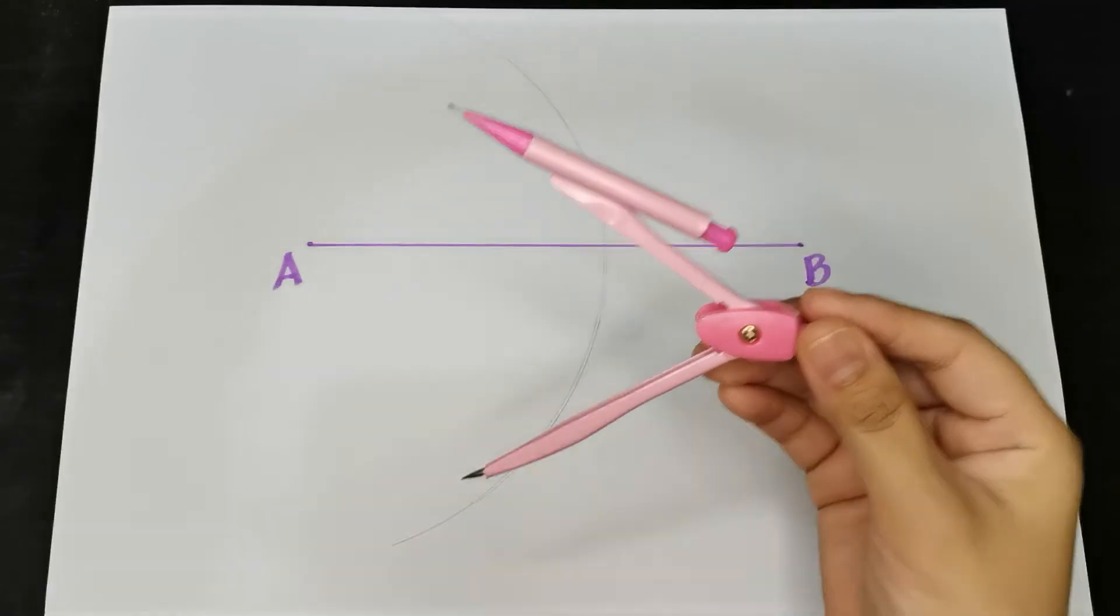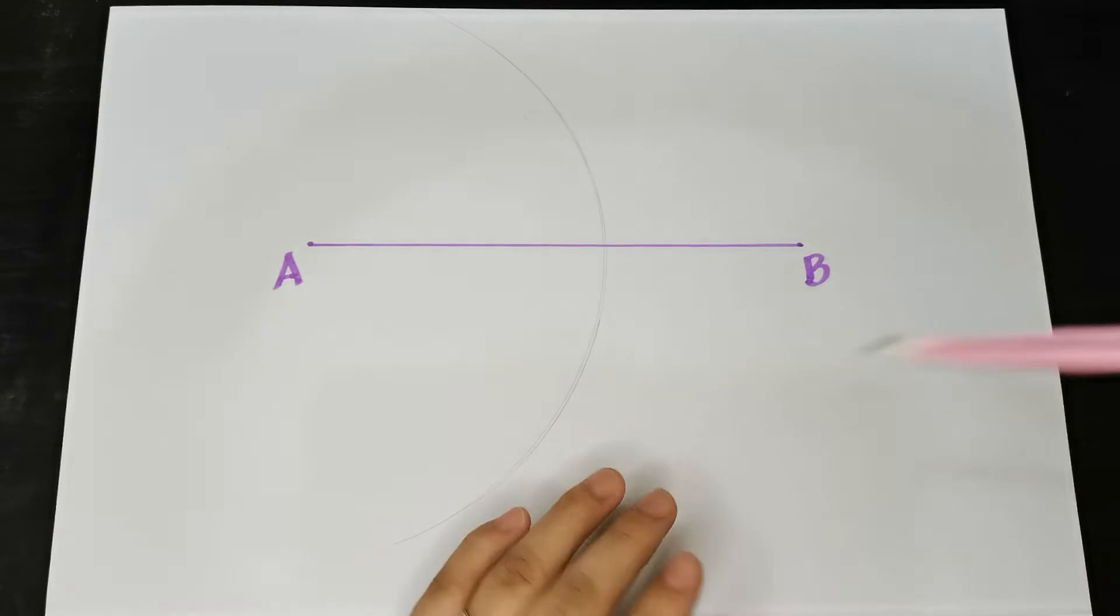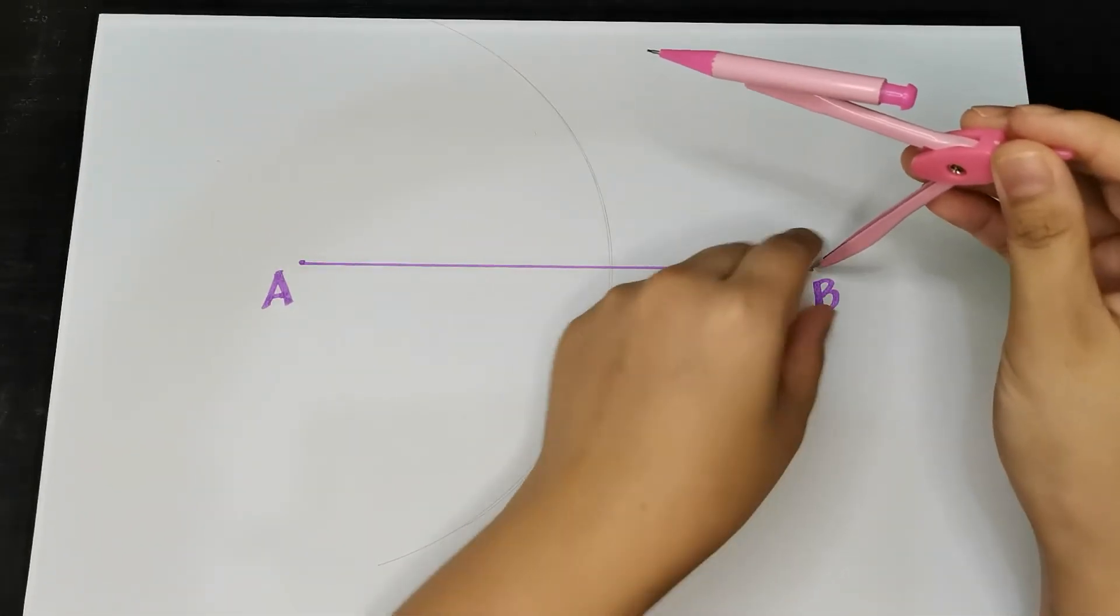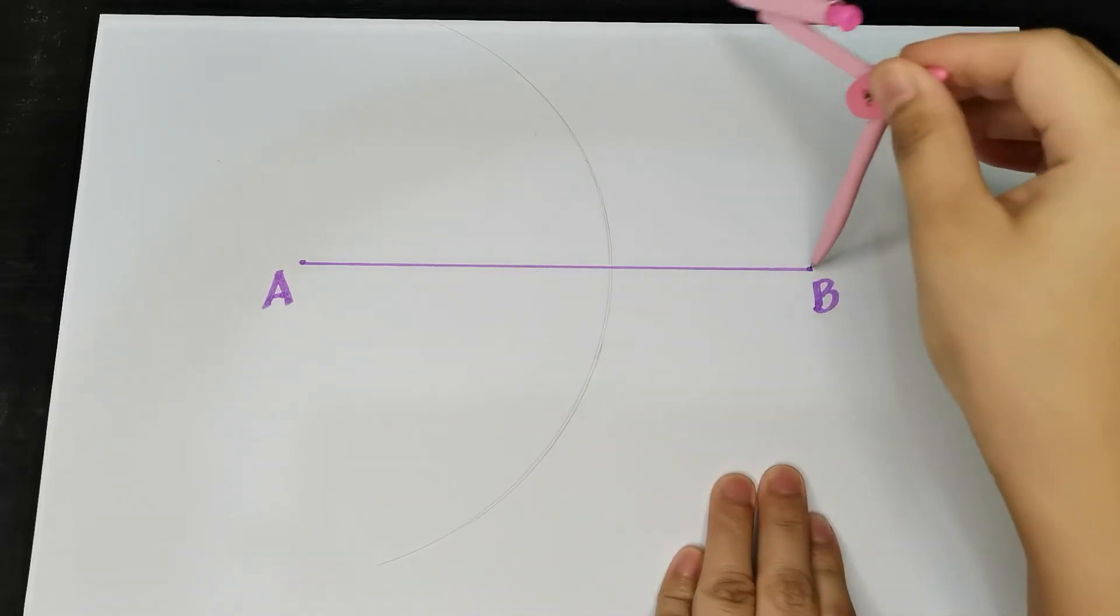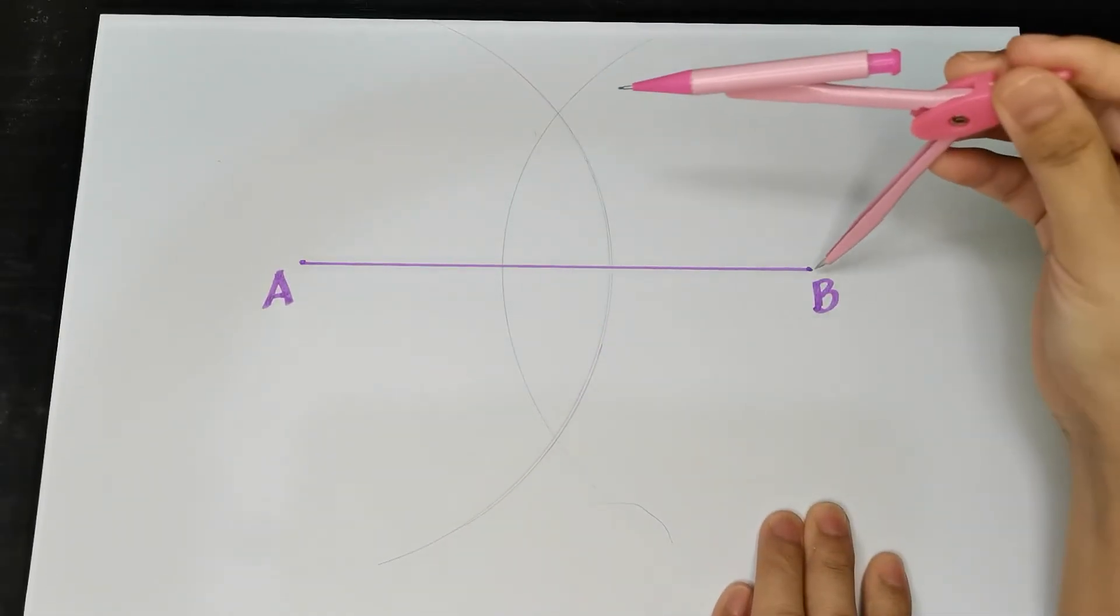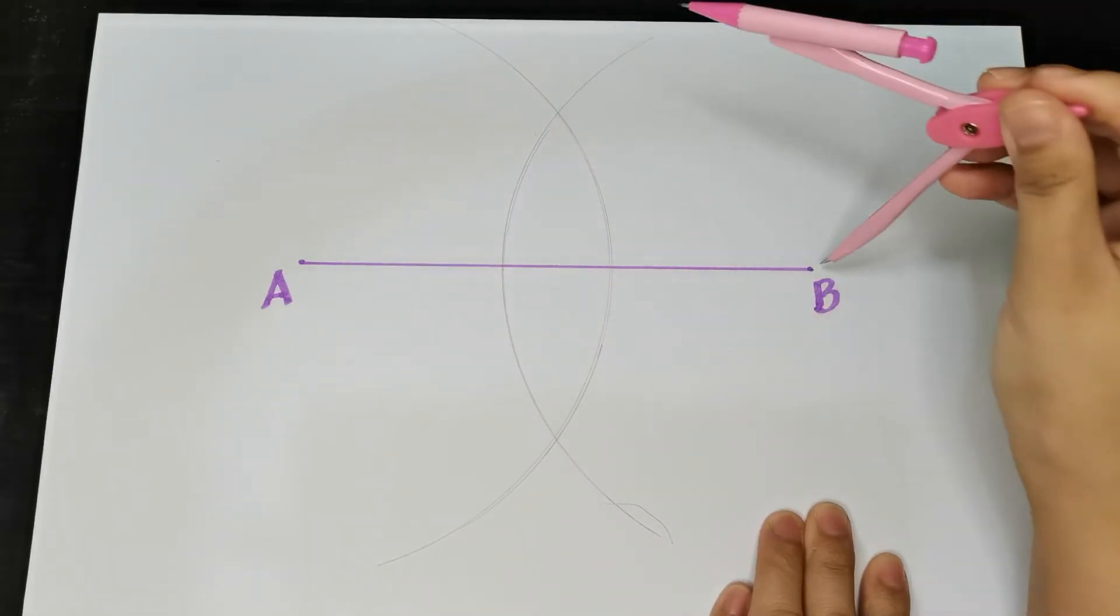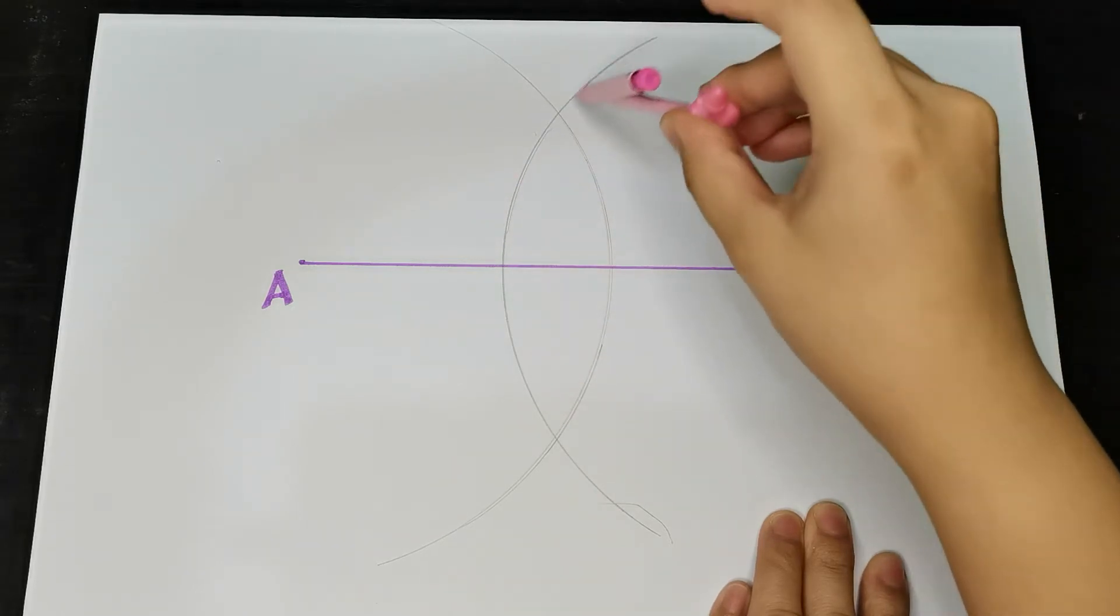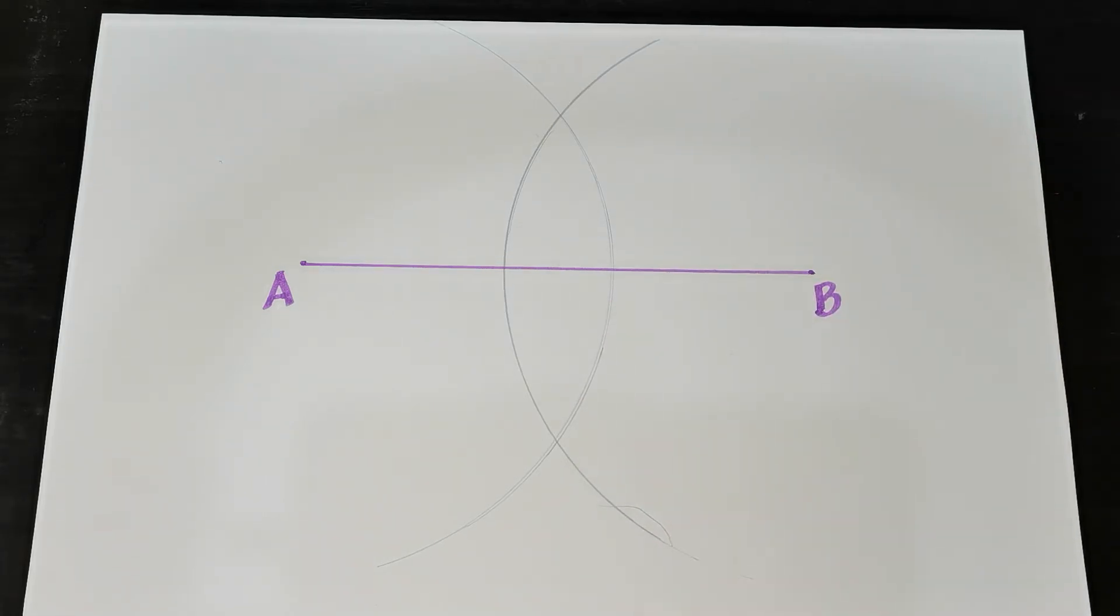Now place the compass on point B. Swing from point B, just like we did at point A. You have to be very careful not to move the compass. Hold it still, and you're almost done.